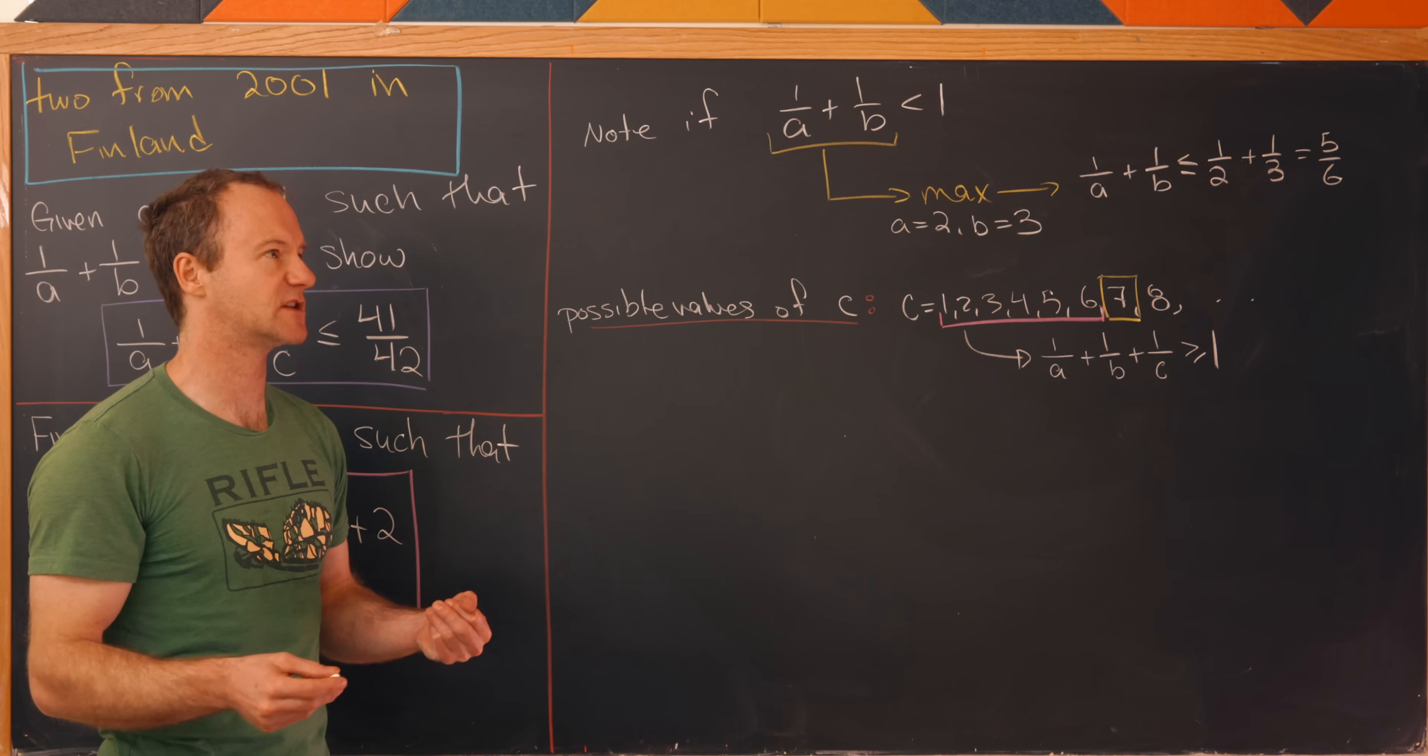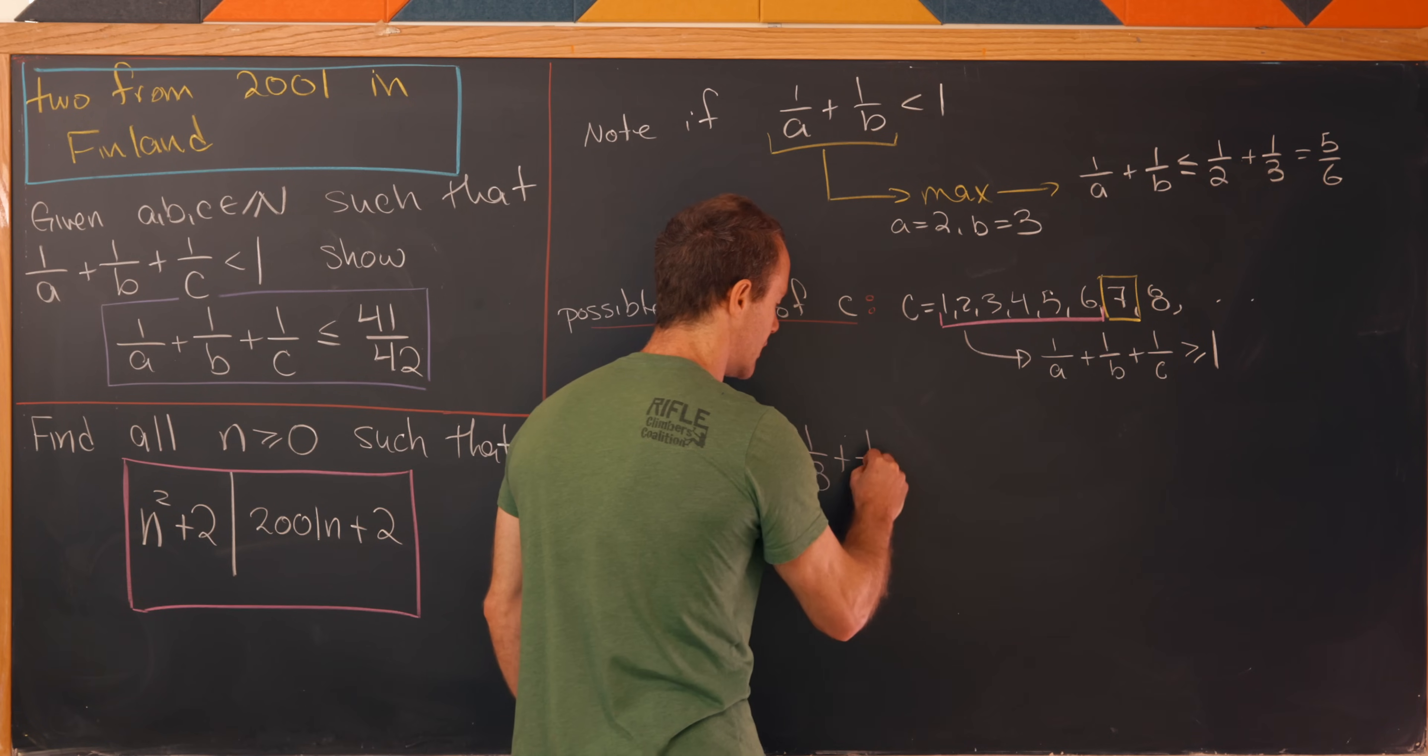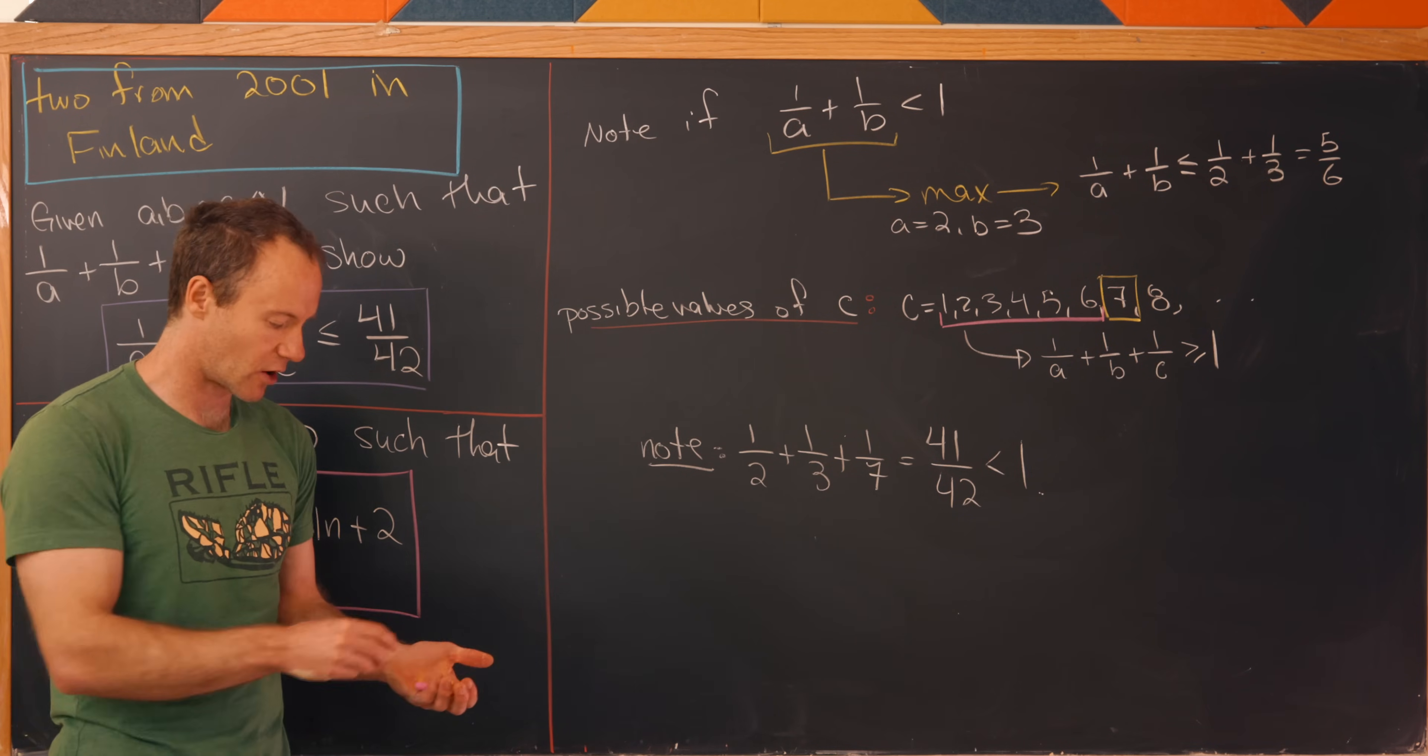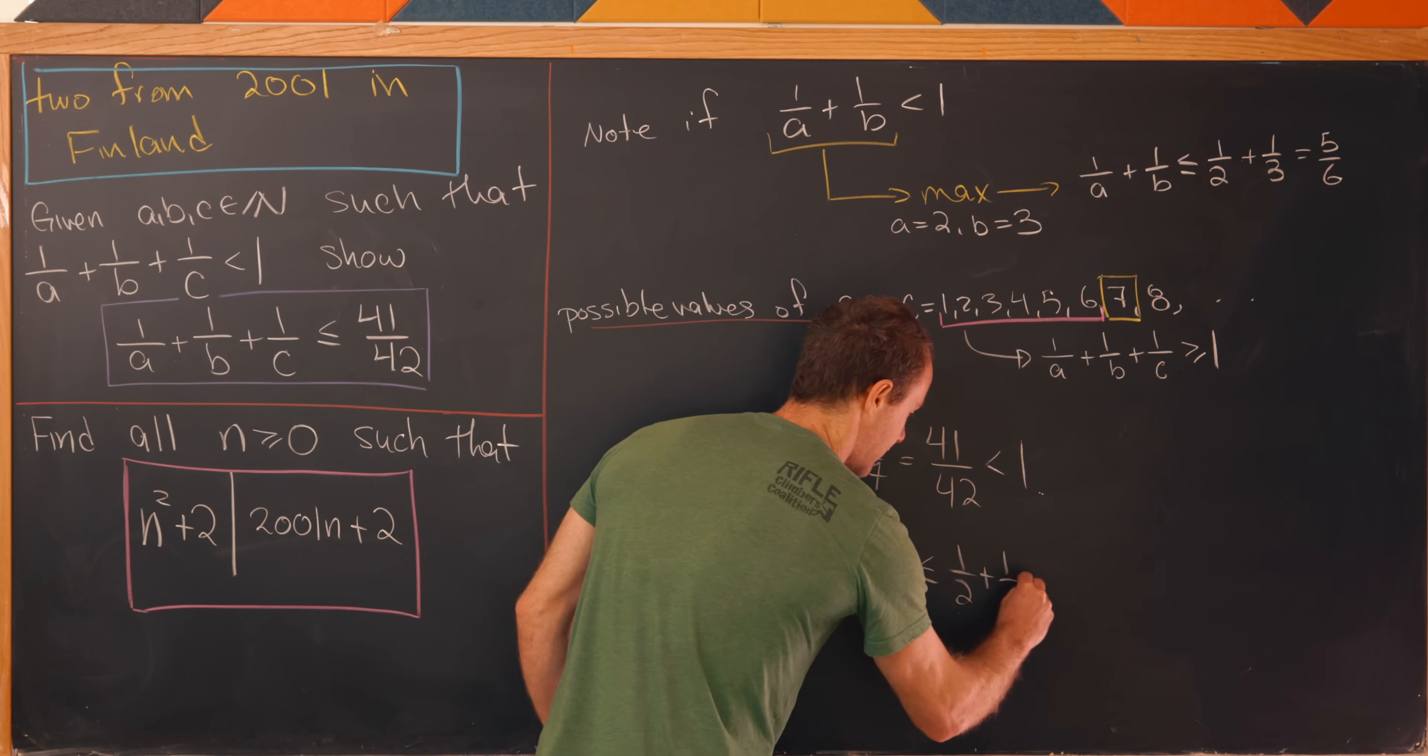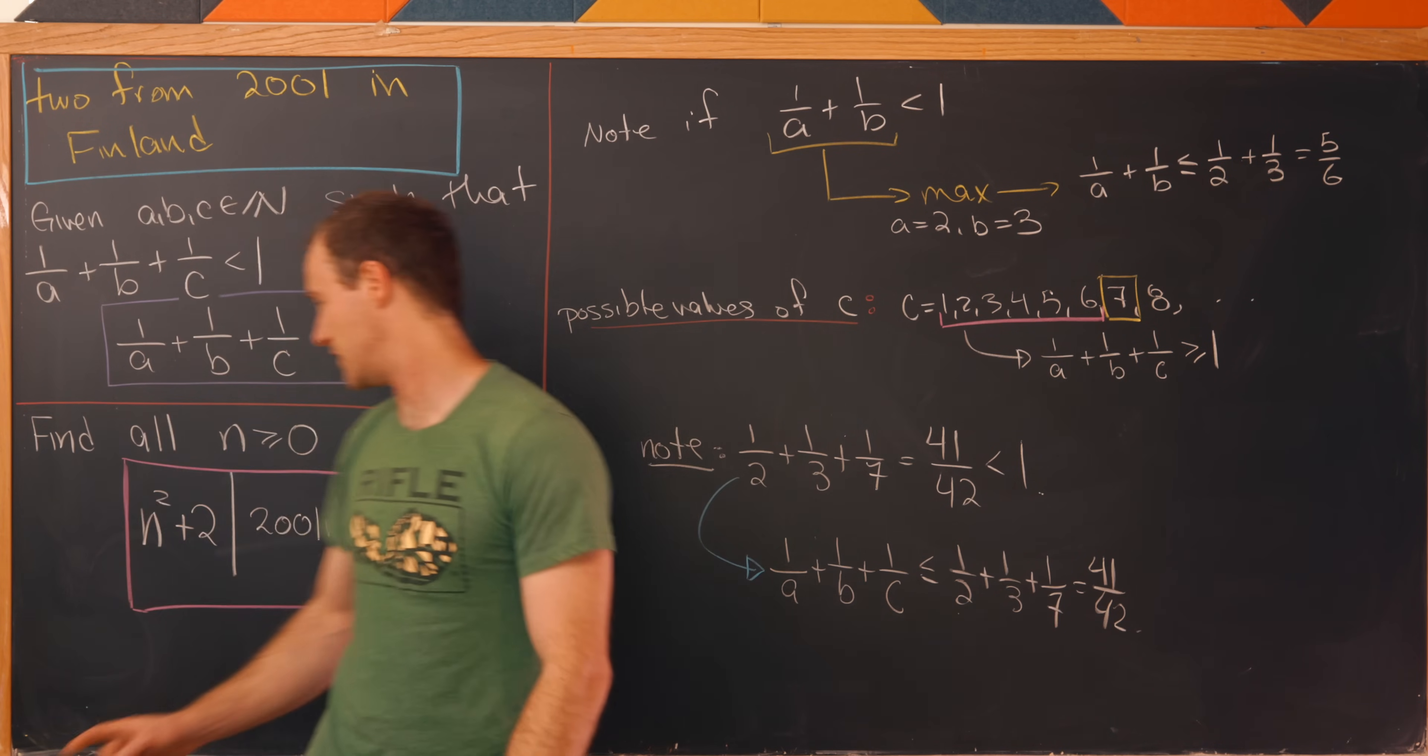So that means the first possible value for C that might work is 7. And then we have to check that that does achieve something which is less than 1, and it does. Let's notice that 1/2 + 1/3 + 1/7 is in fact equal to 41/42, which is less than 1. But by all of that argument that we've said verbally, this is in fact our maximum configuration here. So we have 1/A + 1/B + 1/C is less than or equal to 1/2 + 1/3 + 1/7, which is in turn equal to 41/42. That's exactly what we wanted to show for this first one.